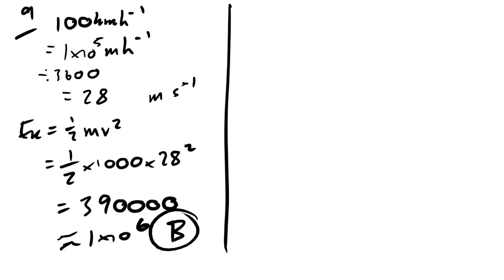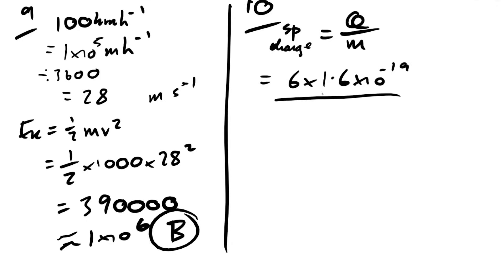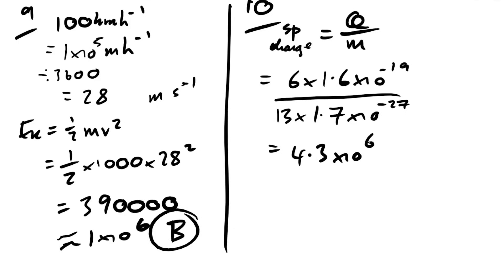Question 10: specific charge of a carbon-13 nucleus. Specific charge = charge/mass = 6×1.6×10⁻¹⁹ / (13×1.7×10⁻²⁷) ≈ 4.3×10⁷ C/kg. The answer is A.